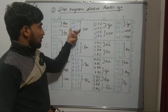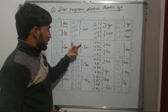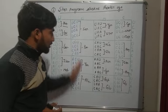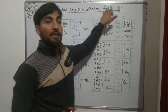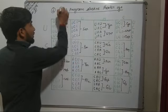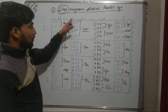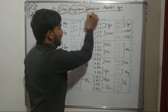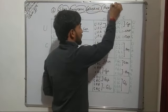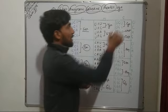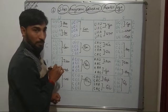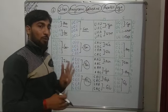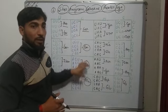For the second column, we have four triplet codons coding for serine, four coding for proline, four coding for threonine, and four coding for alanine. The short trick for this column is: Ser program dekhne theater aya. Here ser is for serine, program is for proline, theater is for threonine, and aya is for alanine. Each of these codons separately codes for only one amino acid across the four boxes.